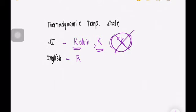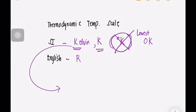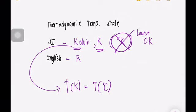The lowest temperature on the Kelvin scale is absolute zero, or zero Kelvin. The Kelvin scale is related to the Celsius scale. To find the temperature in Kelvin, it is equal to the temperature in degrees Celsius plus 273.15.